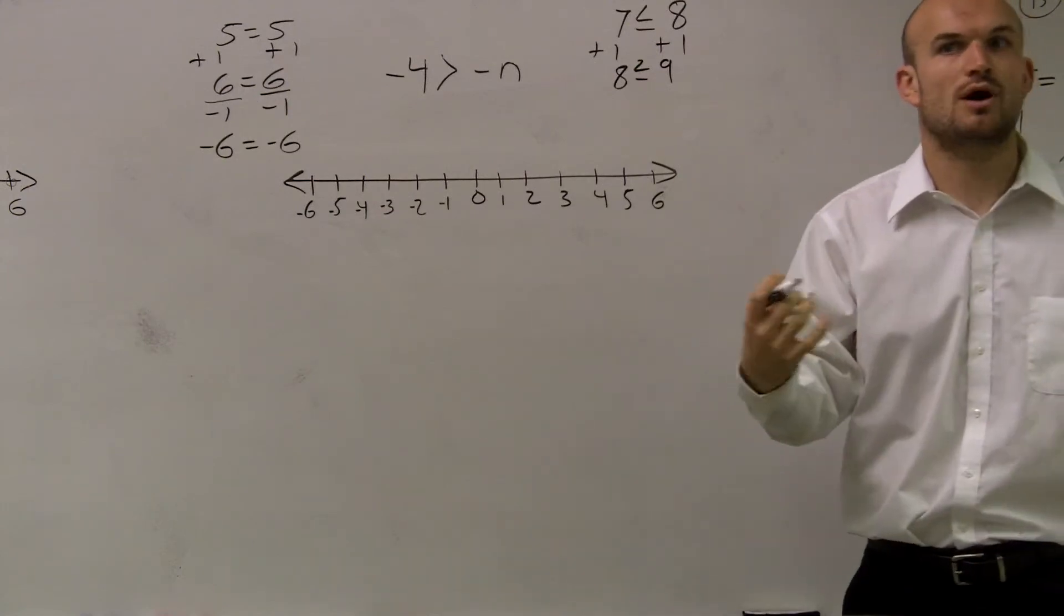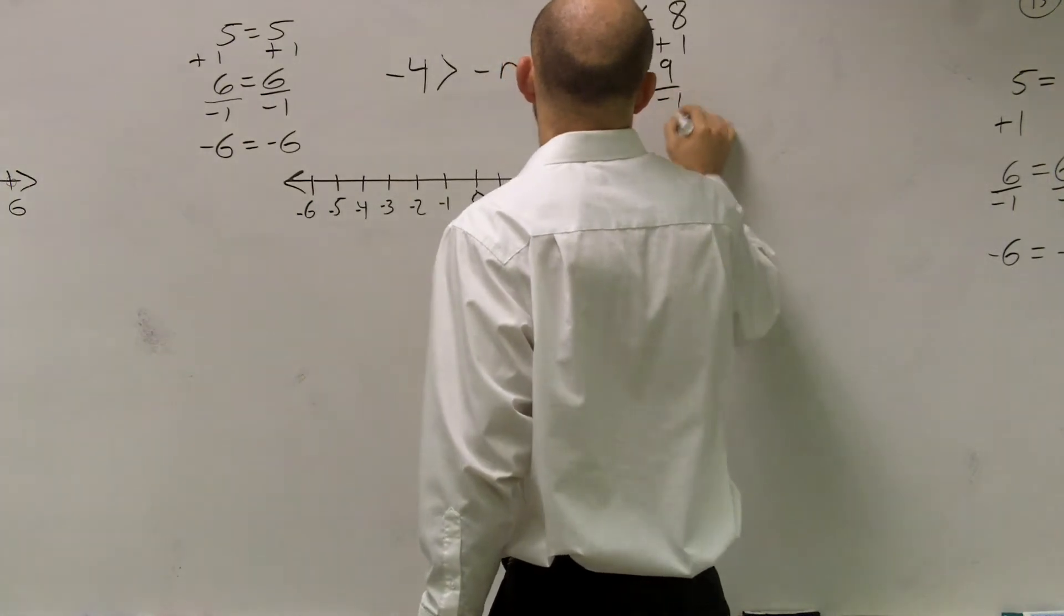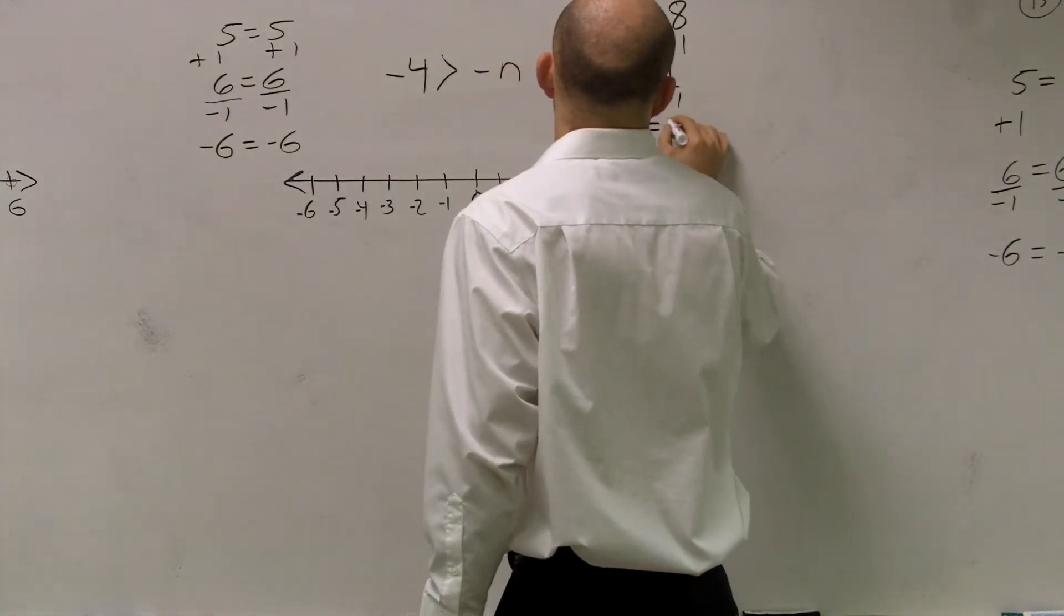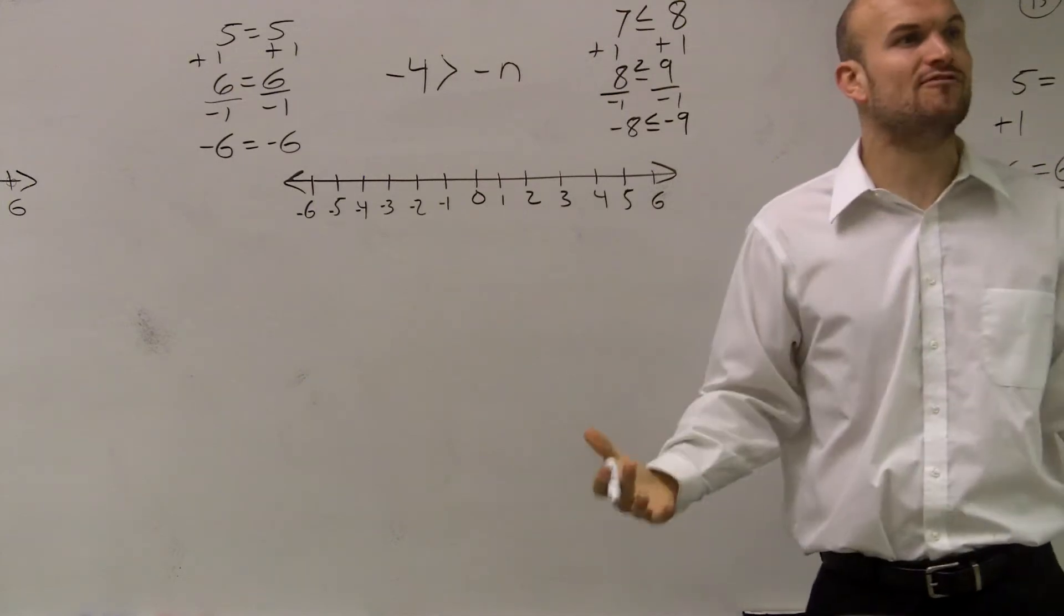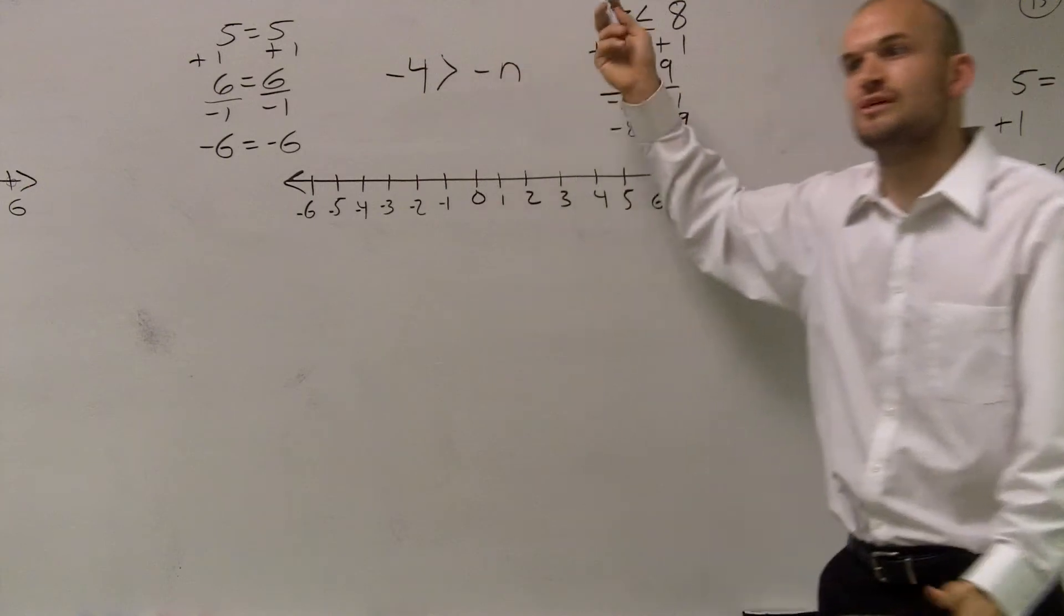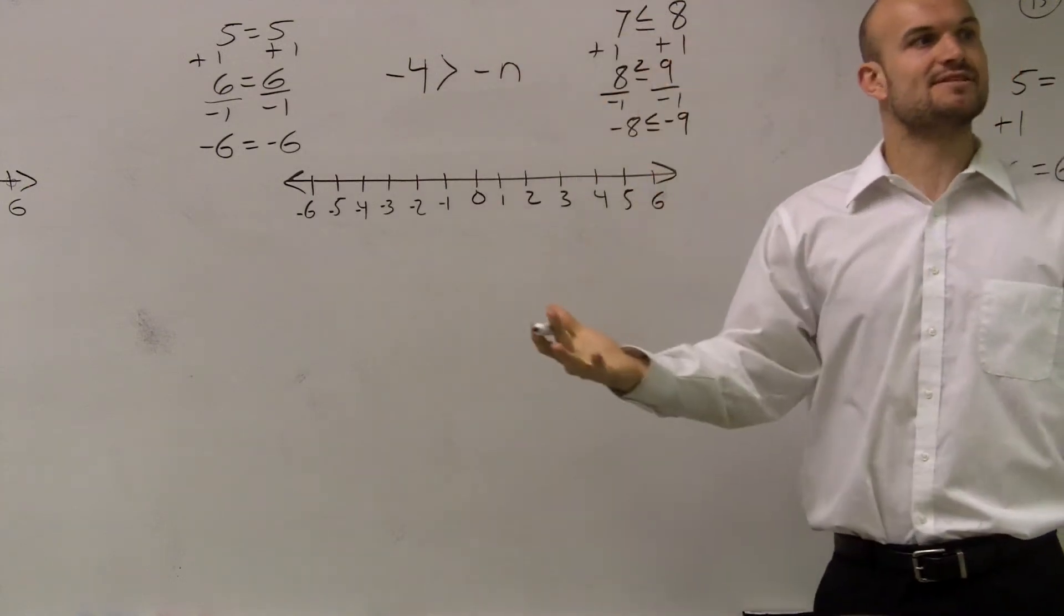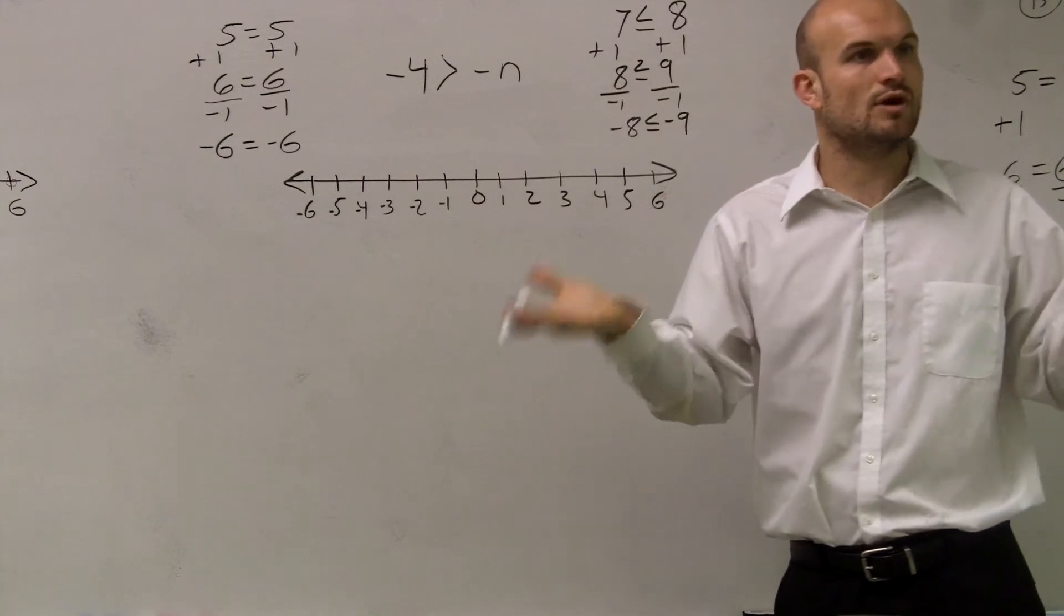However, here's where inequalities differ from equations. If I divide by negative 1, I have now negative 8 is less than or equal to negative 9, which is false. We can't have that because whenever you do something on one side to the other side, they have to still be true because you're doing it equally on both sides.